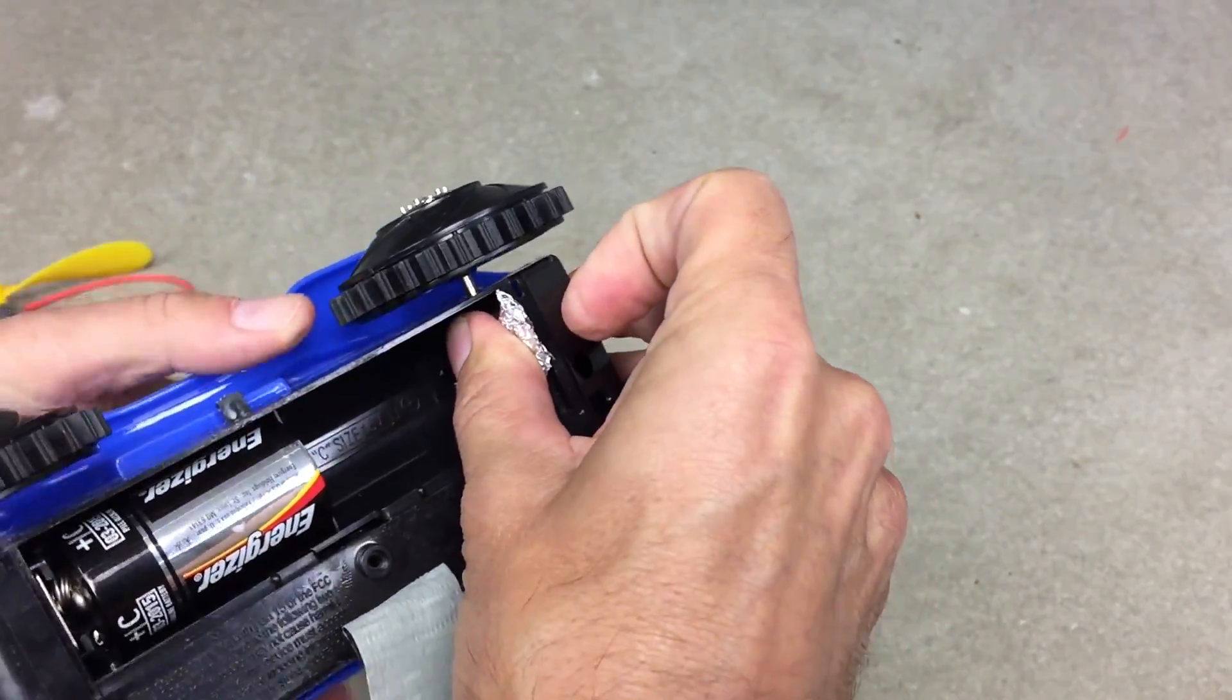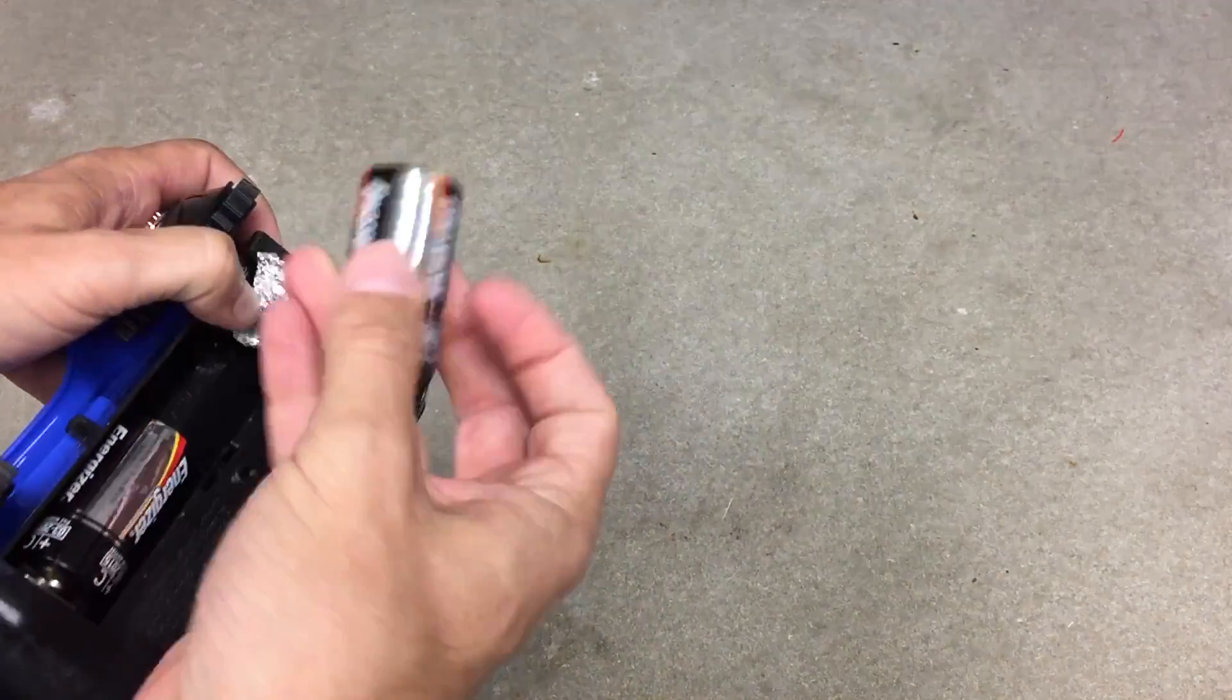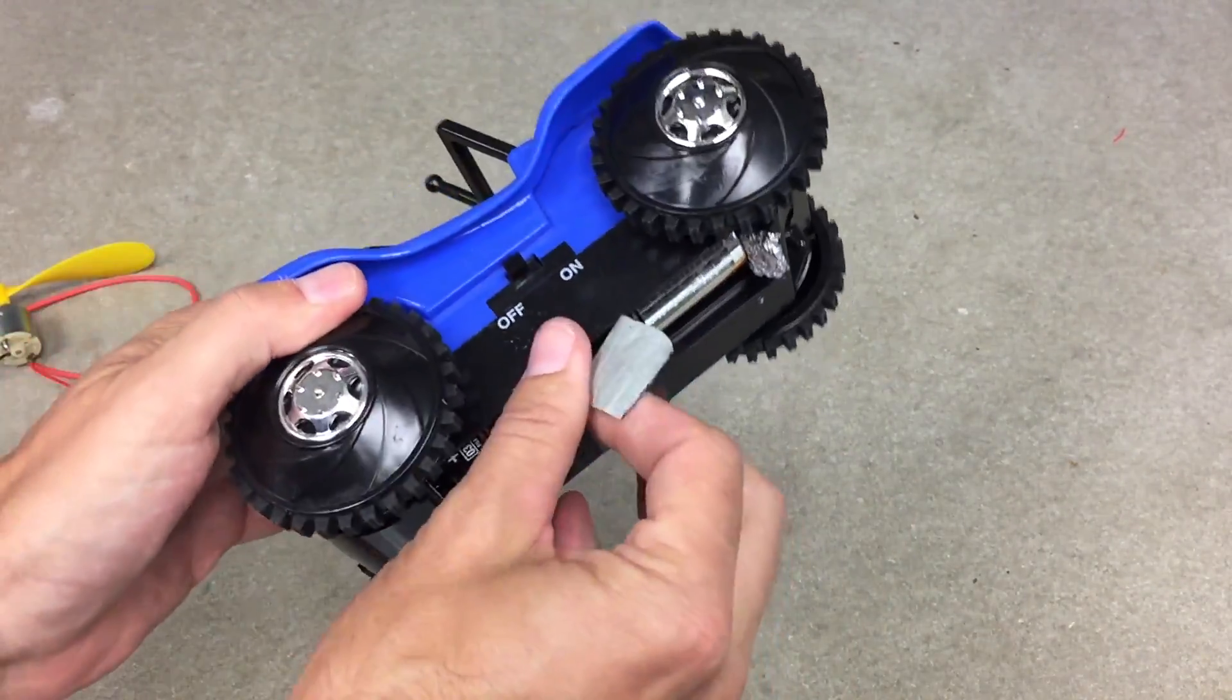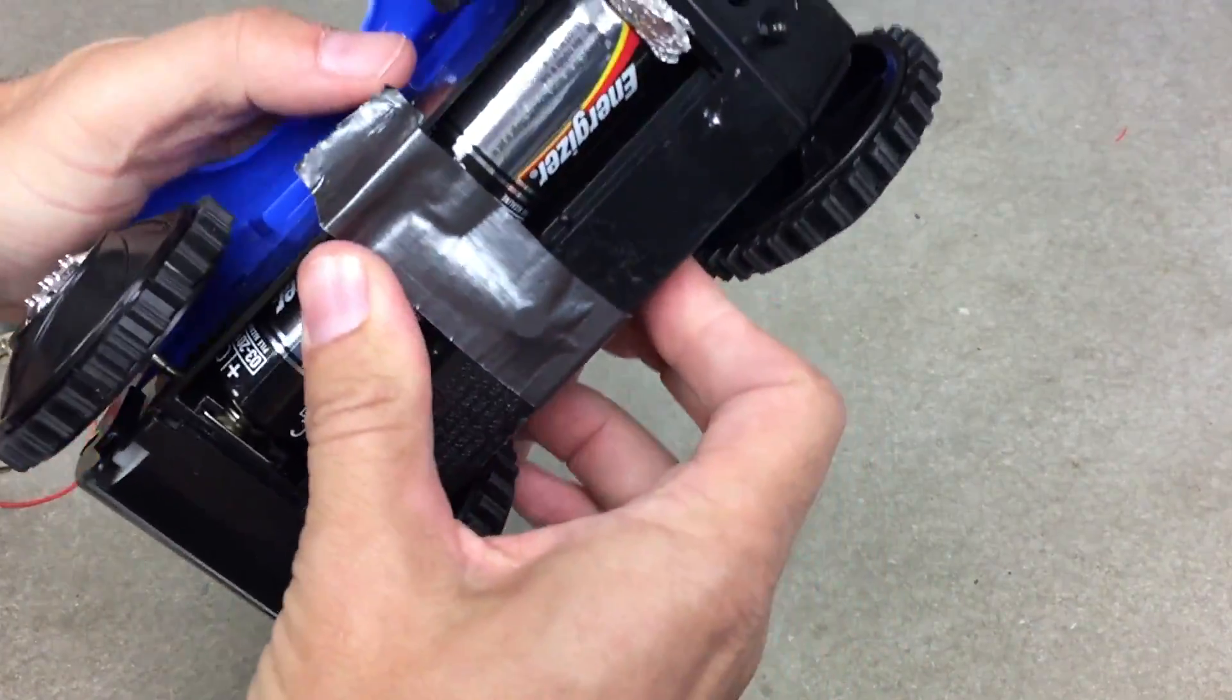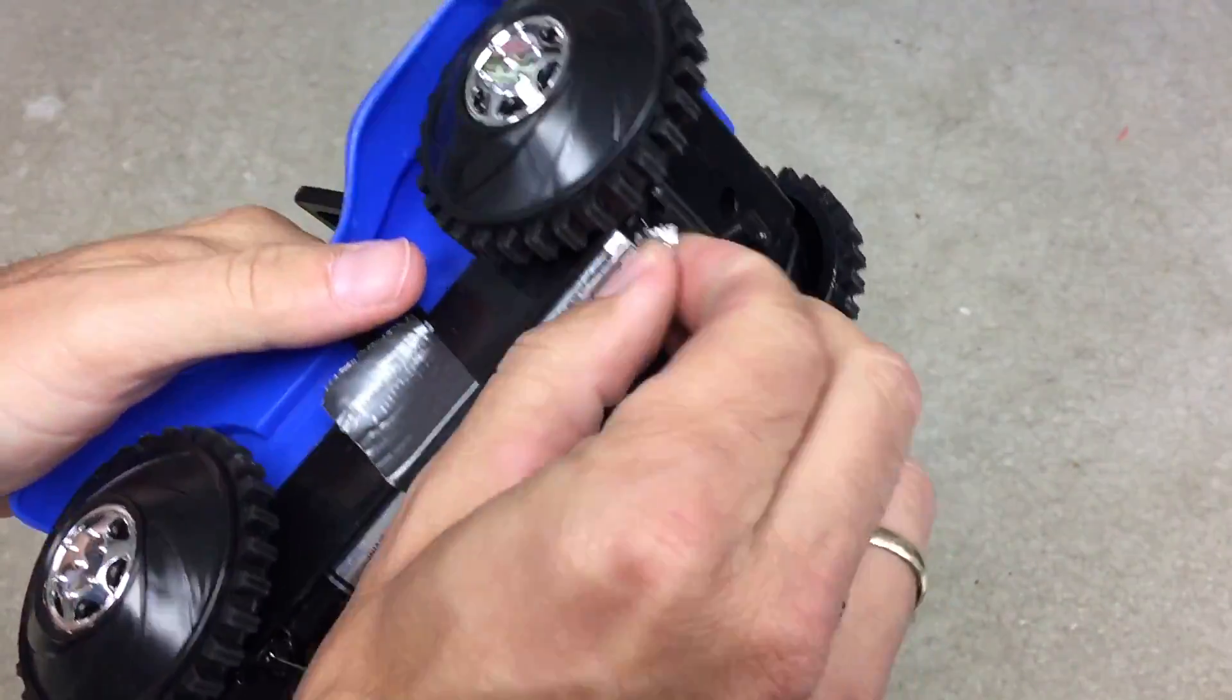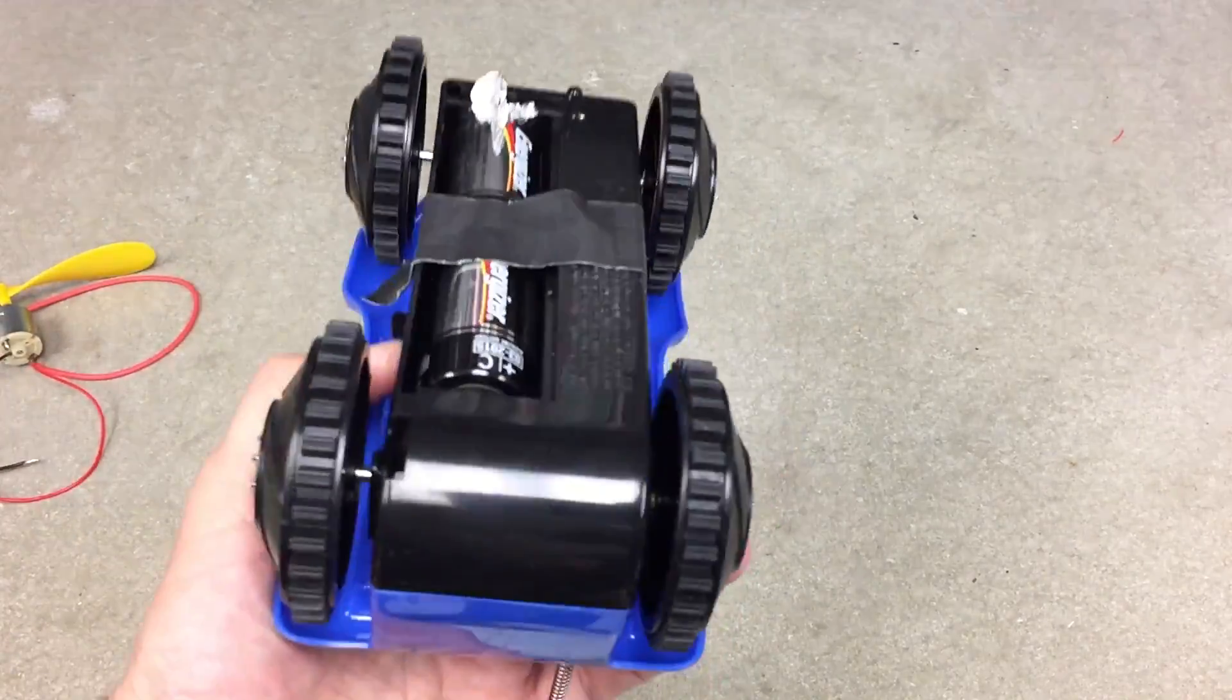Now I can jam the battery in like that. Okay, now I'm going to close it up, turn it on, and nothing happened. It's not touching. Okay, sometimes there. Now it goes backwards. So I switched the direction of the motor by switching the direction of the current.